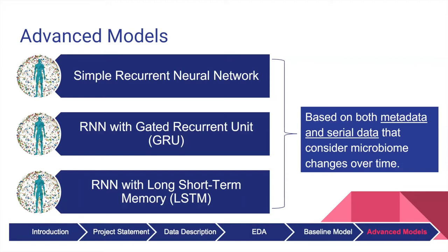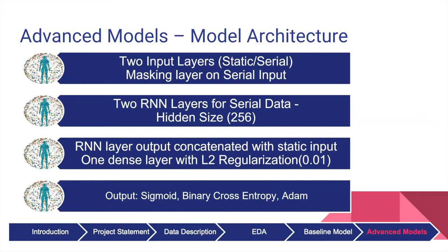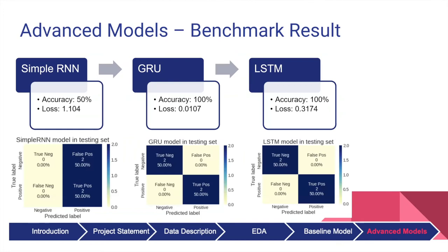Using the metadata of the infants and the abundance data in each microbiome measurement over time, we built a better model using a recurrent neural network (RNN). We tested a simple RNN layer, GRU layer, and LSTM layer. The architecture starts with two input layers for the static and serial data. After masking the serial data, we passed them to two RNN layers with 256 units. The output of the last RNN layer is concatenated with the static input and passed to a dense layer with L2 regularization on the kernel and bias. The dense layer used sigmoid as the activation function, binary cross-entropy as the loss function, and Adam as the optimizer.